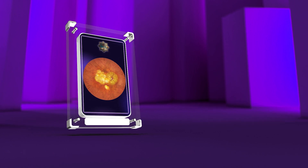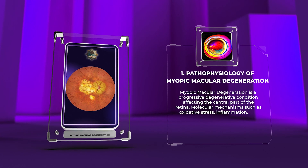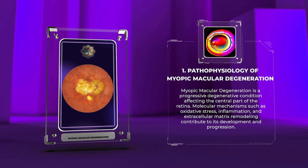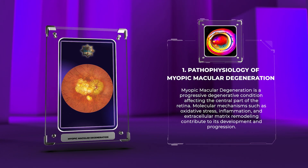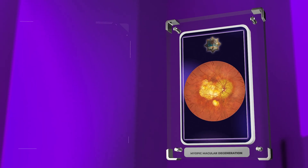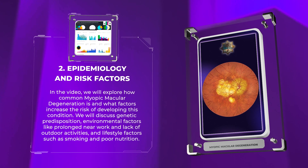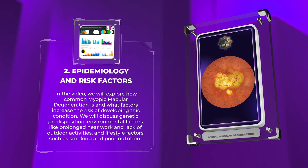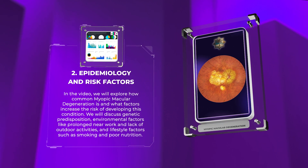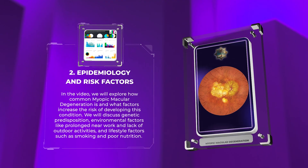Myopic macular degeneration is a progressive degenerative condition affecting the central part of the retina. Molecular mechanisms such as oxidative stress, inflammation, and extracellular matrix remodeling contribute to its development and progression. We will explore how common myopic macular degeneration is and what factors increase the risk, including genetic predisposition, environmental factors like prolonged near work and lack of outdoor activities, and lifestyle factors such as smoking and poor nutrition.